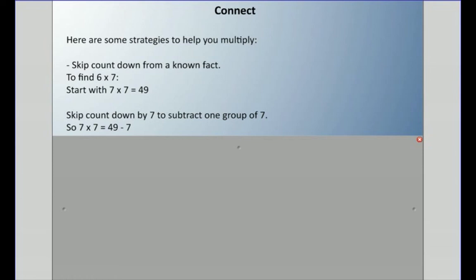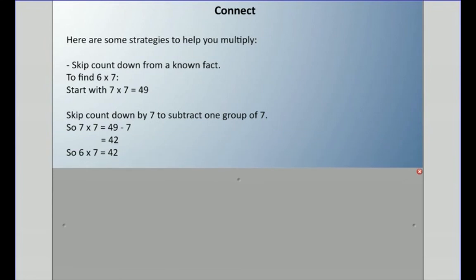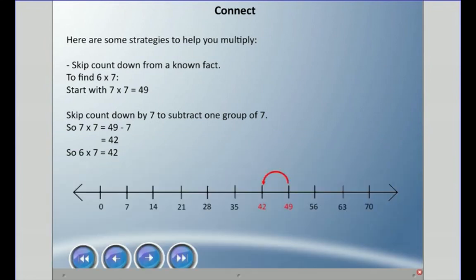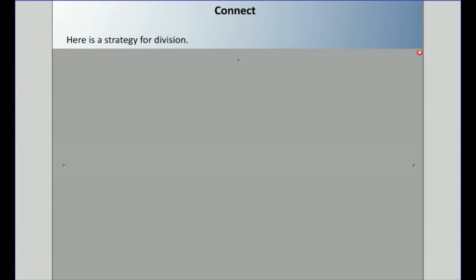And again, there's the number line. If you know seven times seven is 49, you subtract seven to get to six times seven, and that equals 42.